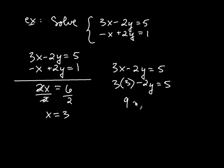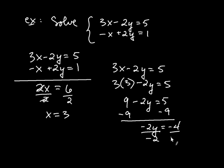So I get, it's going to be 9 minus 2y is 5. And now we'll subtract 9 from both sides. So it's going to be negative 2y is equal to negative 4. Divide now both sides of that by negative 2. And I get, y is equal to negative 4 divided by negative 2 is positive 2. So y is positive 2. So my solution is the ordered pair, 3, x is 3, and y is positive 2.